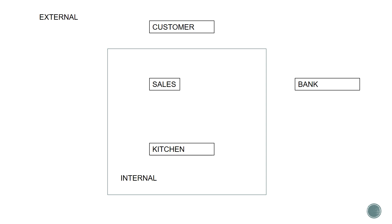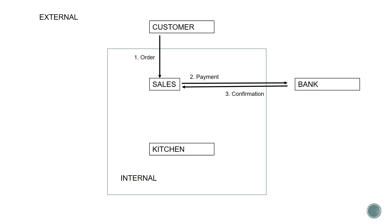If we think about the process: the first thing that happens is the customer orders their food — that is the first flow, the order going from the customer to the sales team. Second, the sales team processes the payment, which flows from the sales team to the bank, and then the bank confirms whether it's gone through or not — approved or not approved, or maybe you've paid in cash. Either way the payment needs to be made. After that, sales will pass on the order to the kitchen who will prepare the meal, and when ready they'll send it back to the sales team who will give it to the customer.